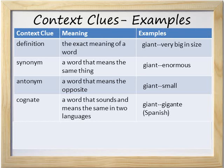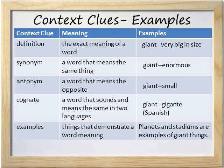Cognate — remember that cognates are words that sound and mean the same thing in two languages. For example, giant in English is a cognate of gigante in Spanish. They sound similar and they mean the same thing. And finally, examples — things that demonstrate a word meaning. Planets and stadiums are examples of giant things.